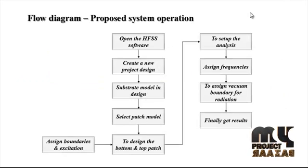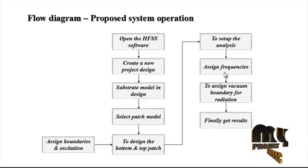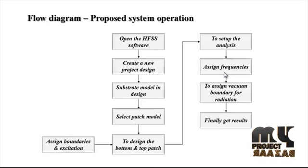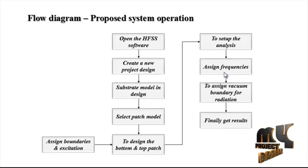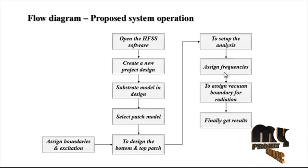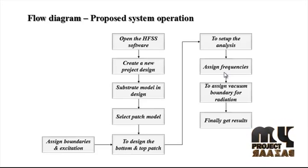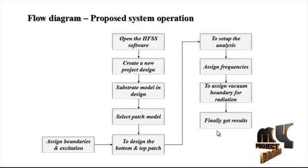Then we set up the analysis by assigning frequencies, such as GHz values. We also assign a vacuum boundary for radiation, which represents the surrounding environment of the antenna. Finally, we obtain results including radiation pattern, return loss, VSWR, and bandwidth — all calculated using the HFSS software. These are the overall steps shown in the flow diagram.